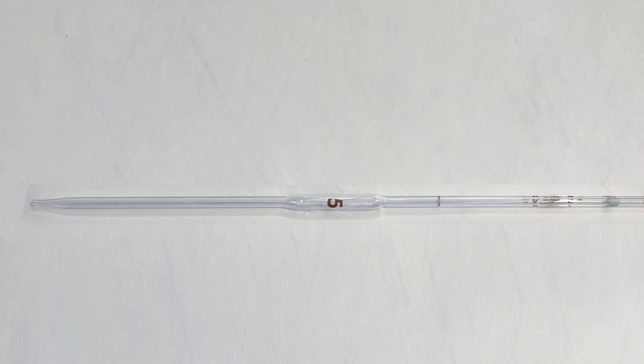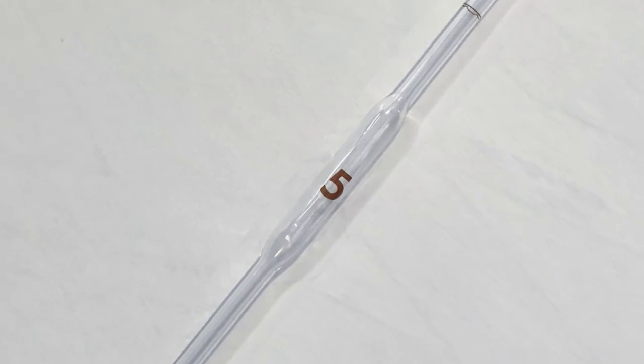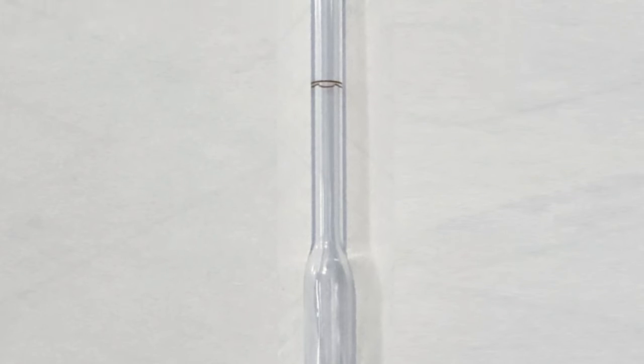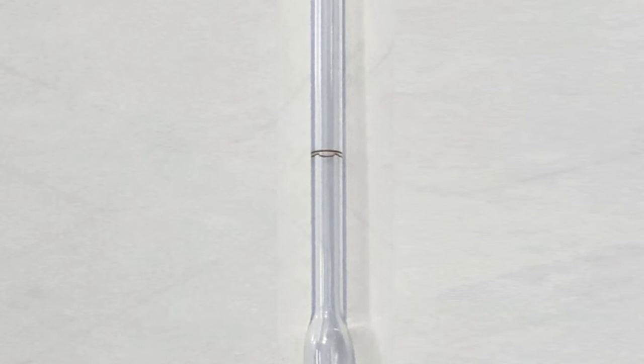A transfer pipette is meant to deliver a specific volume. It has a mark near the top. Fill it so that the bottom of the meniscus is on this line.